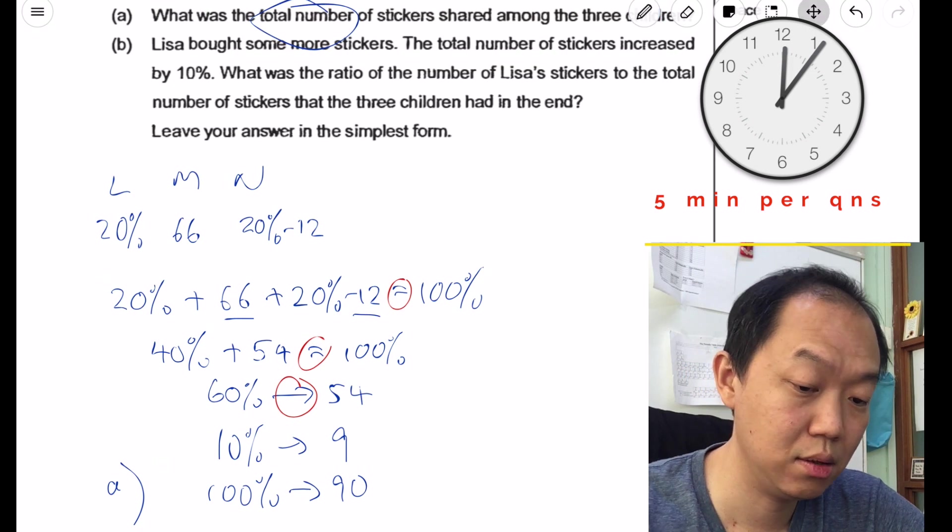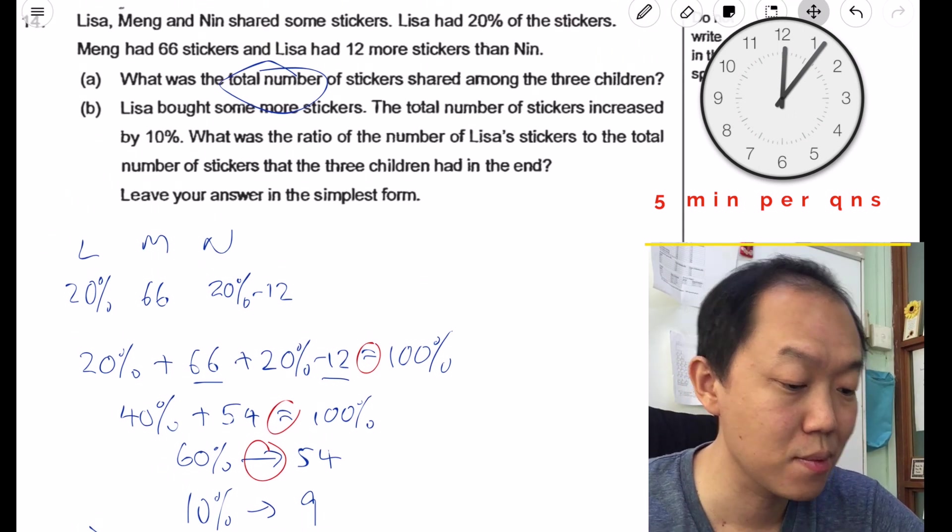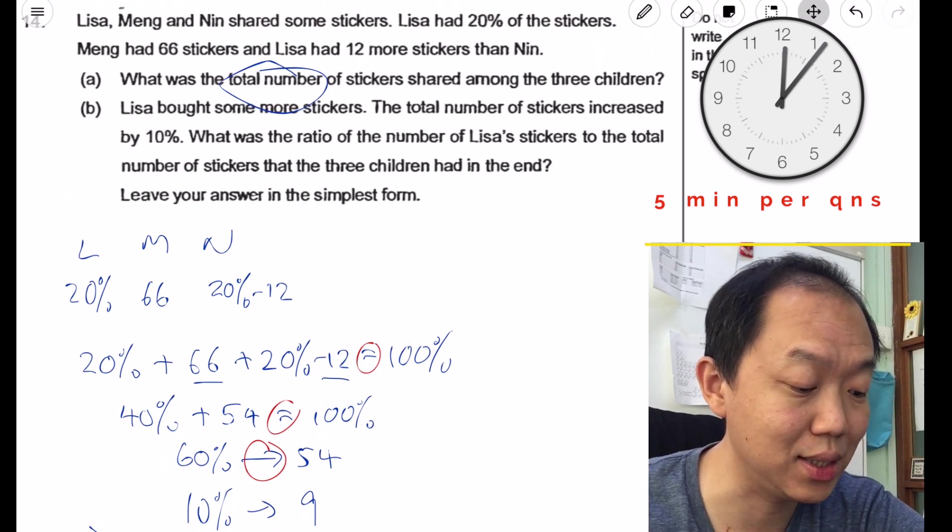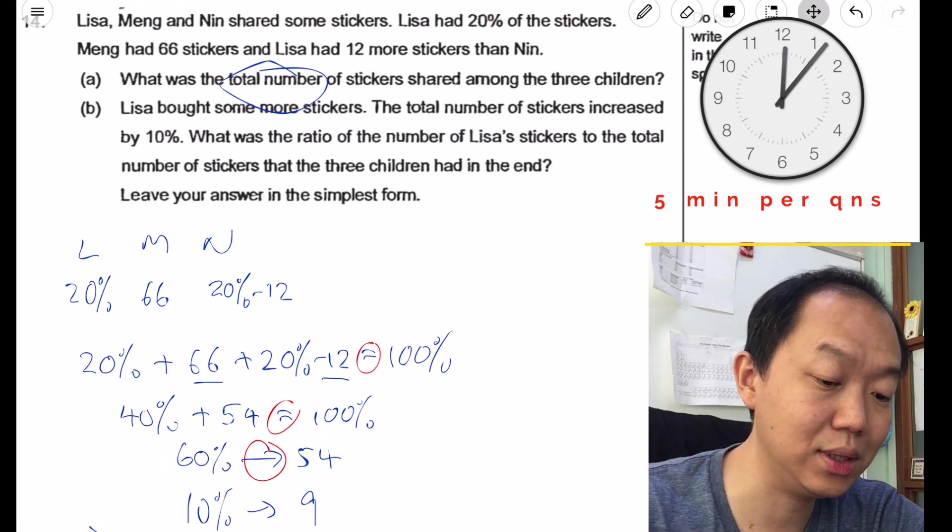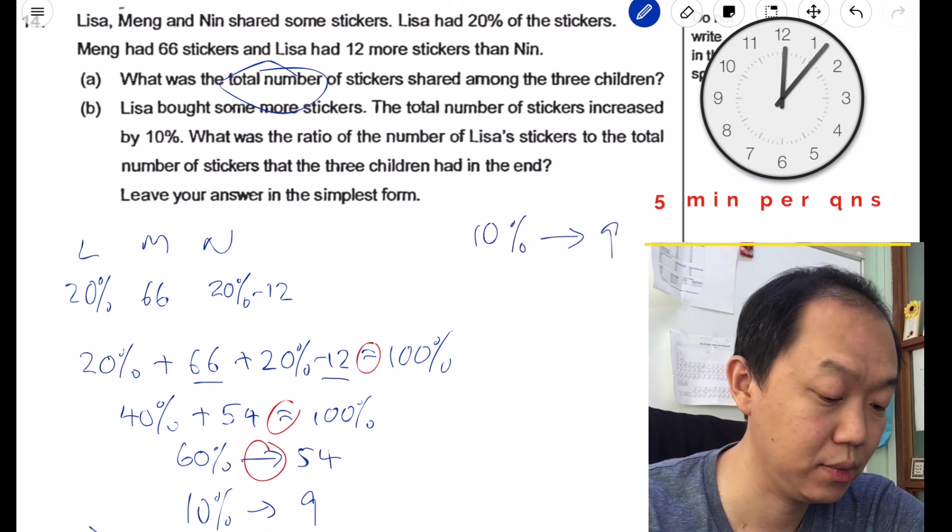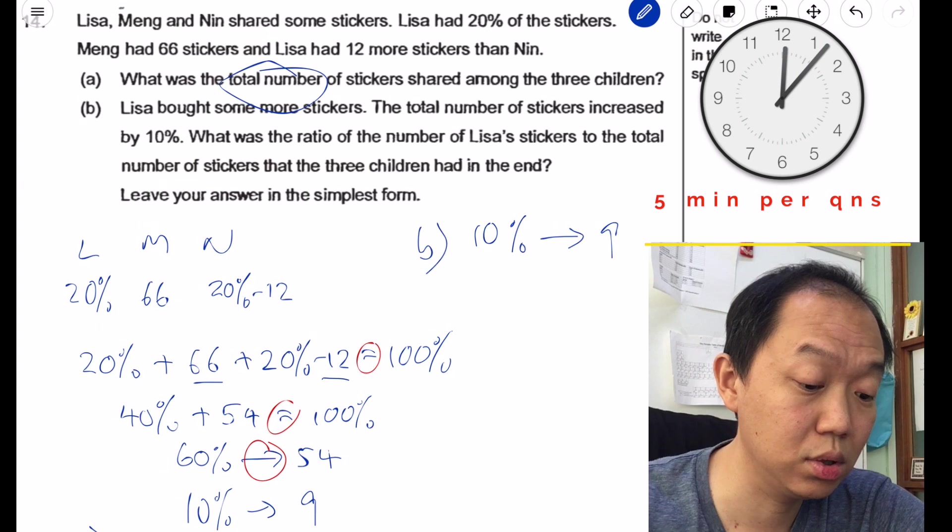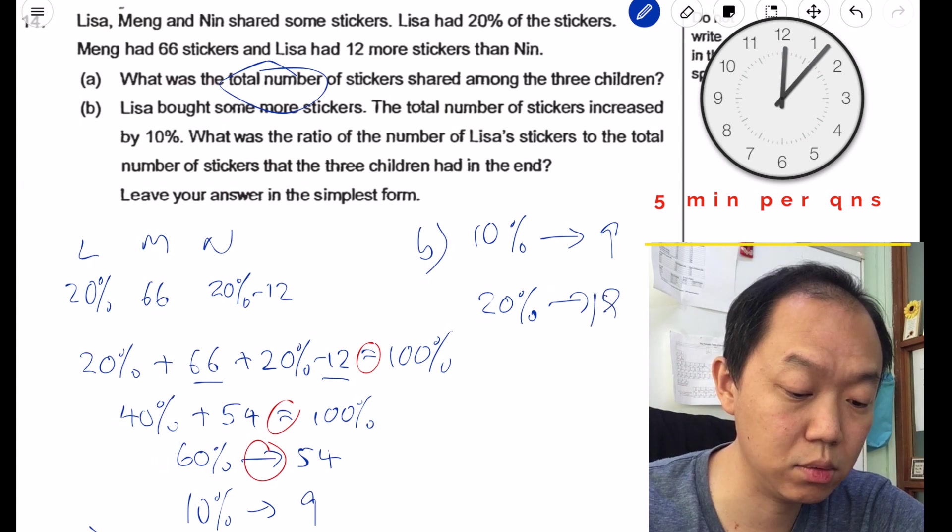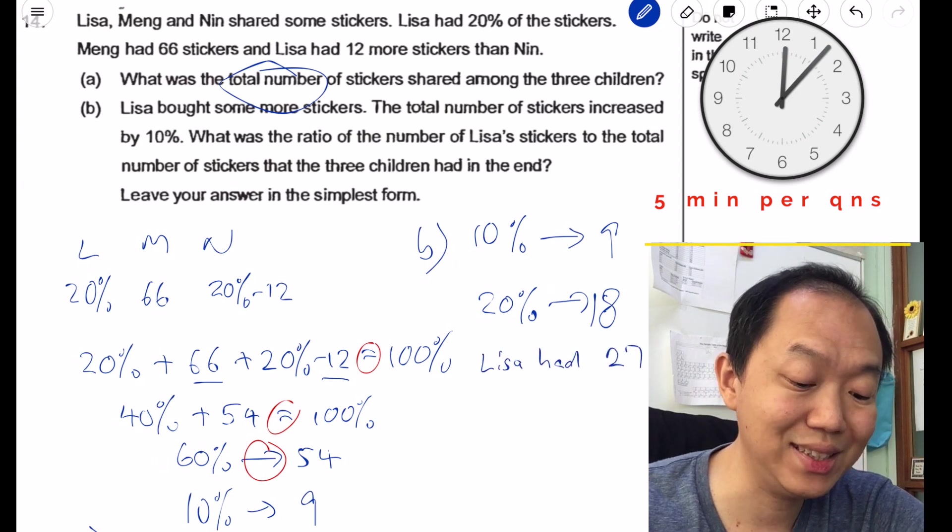Next, Lisa bought some more stickers, the total number of stickers increased by 10%. What was the ratio of the number of Lisa's stickers to the total number of stickers in the end? Lisa is the only one who bought stickers. If the total increased by 10%, and the total is 90, that means 10% is equivalent to 9. What this means is Lisa bought 9 stickers. So at first, Lisa had 20%, so that's 18, plus an additional 9, so Lisa had 27 stickers at the end.